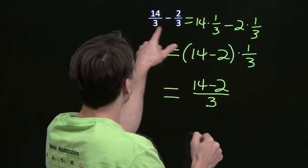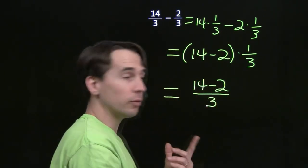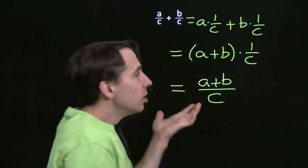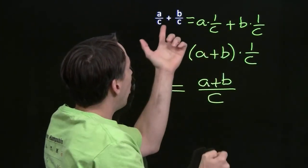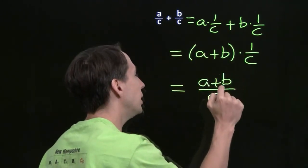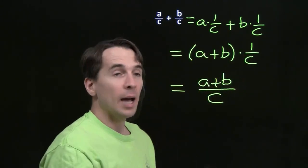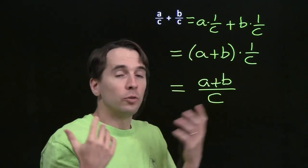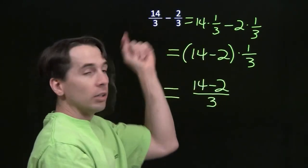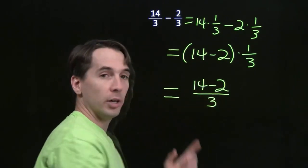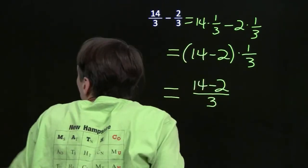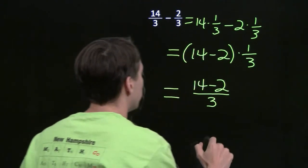When we multiply 14 minus 2 and the 1, we just get 14 minus 2, and we'll have (14 minus 2) over 3. So 14 over 3 minus 2 over 3 is (14 minus 2) over 3. We can replace all the plus signs with minus signs and see that if we subtract two fractions that have the same denominator, all we do is take the first numerator minus the second numerator and the denominator stays the same.